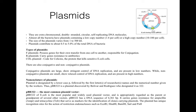Plasmids are circular, extrachromosomal, double-stranded, self-replicating DNA molecules. Almost all bacteria have a plasmid which may contain a low copy number — that is, one to four per cell — or a high copy number of ten to one hundred plasmids per cell. The size of plasmids varies from 1 to 500 kb, and plasmids contribute about 0.5 to 5.0 percent of the total DNA of the bacteria.